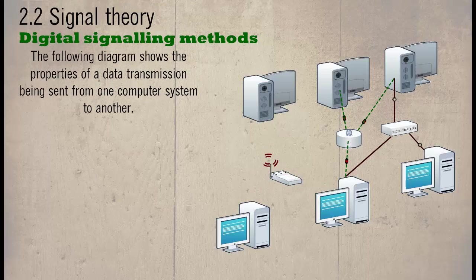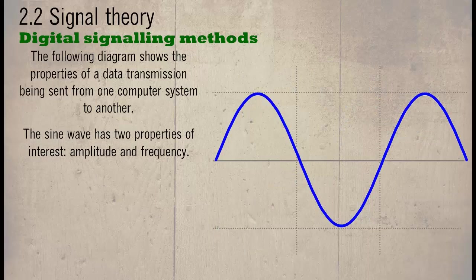The following shows the properties of a data transmission being sent from one computer system to another. The sine wave has two properties of interest: amplitude and frequency.